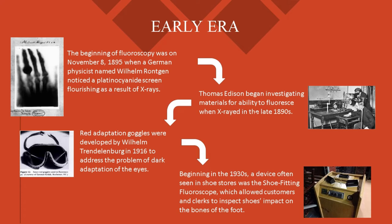The fluoroscopic image obtained in this way was quite faint. Even when finally improved and commercially introduced for diagnostic imaging, the limited light produced from the fluorescent screen necessitated that a radiologist sit for a period in a darkened room to first accustom his eyes to increase their sensitivity to perceive the faint image. The placement of the radiologist behind the screen also resulted in significant radiation exposure. In the late 1890s, Thomas Edison began investigating materials for their ability to fluoresce when exposed to x-rays, and by the turn of the century he had invented a fluoroscope with sufficient image intensity to be commercialized.